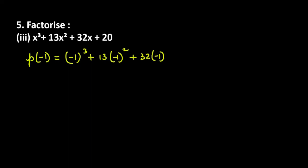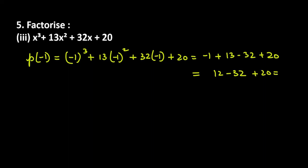Let's check if x = minus 1 gives 0. Substituting: (minus 1) cube is minus 1, 13 × (minus 1) square is 13, 32 × minus 1 is minus 32, and the last term is 20. So: minus 1 plus 13 = 12, then 12 minus 32 = minus 20, then minus 20 plus 20 = 0. This means minus 1 is our factor.